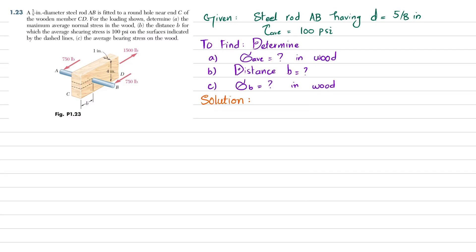Welcome back to problem 1.23. The statement is: a 5/8 inch diameter steel rod AB is fitted to a round hole near end C of the wooden member CD. For the loading shown, determine the maximum average normal stress in the wood, the distance B for which the average shearing stress is 100 psi on the surface indicated by dash line, and the average bearing stress on the wood.